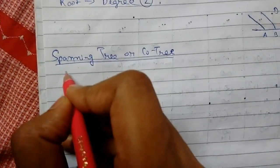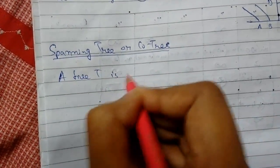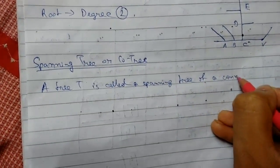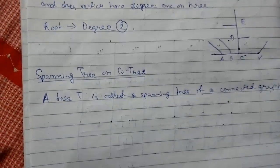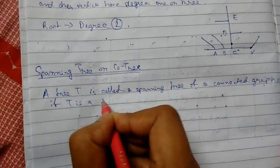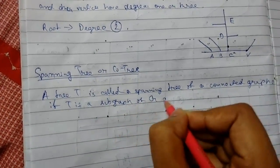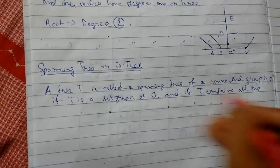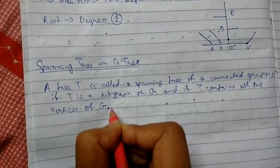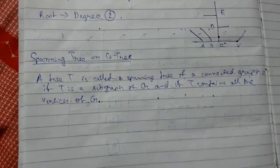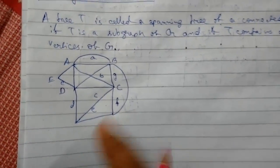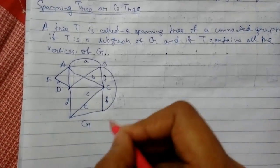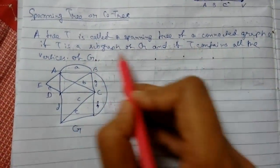Now we will see what a spanning tree is. A tree T is called a spanning tree of a connected graph G if T is a subgraph of G and T contains all the vertices of G. These two conditions define a spanning tree.